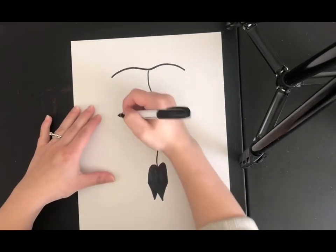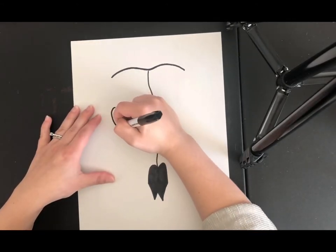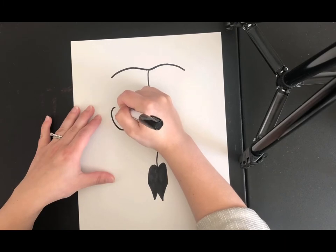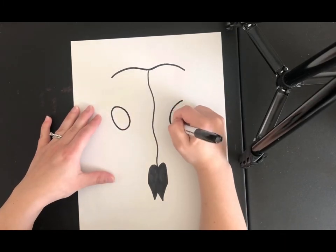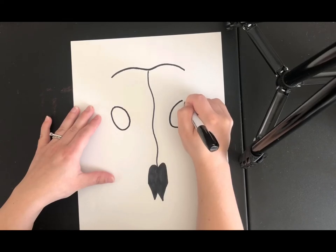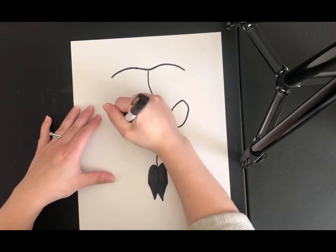And then you want to create two ovals, one on each side. These are your eye sockets and you'll go ahead and color those in as well.